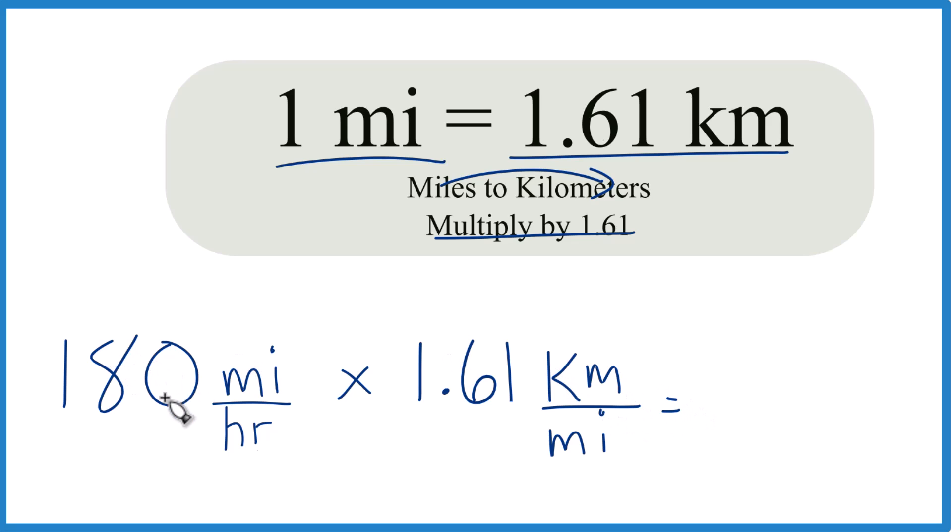Because now we multiply 180 by 1.61, we get 289.8. And because we have miles here and down on the bottom, they cancel out. We're left with kilometers per hour.